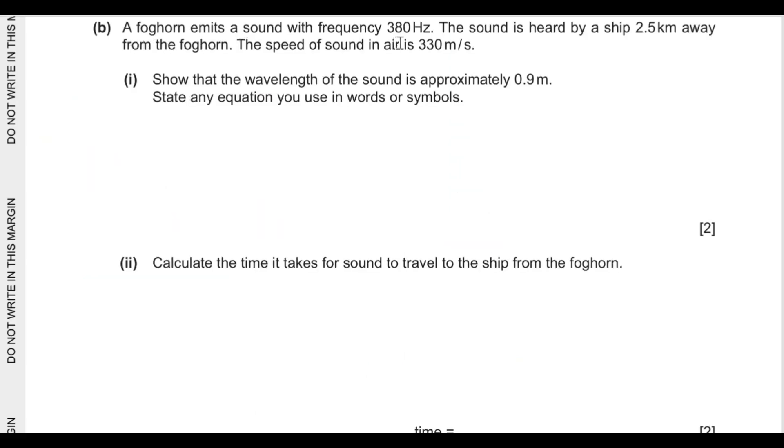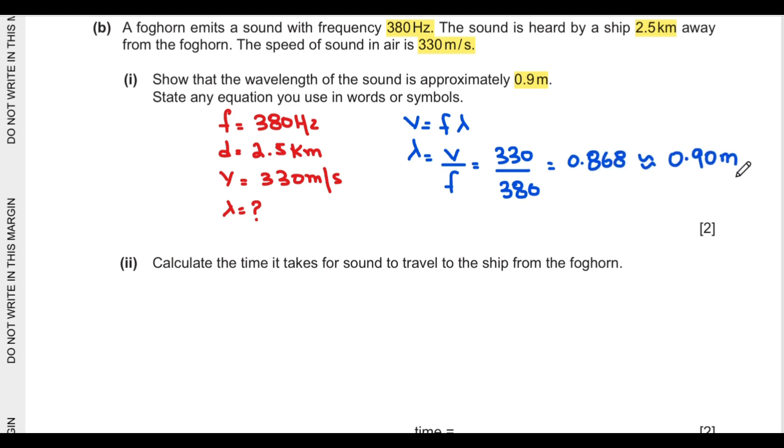Part B says a foghorn emits a sound with frequency 380 hertz. The sound is heard by a ship 2.5 kilometers away. The speed of sound in air is 330 meters per second. Show that the wavelength of the sound is approximately 0.9 meters. State any equation you use in words or symbols. We can use wave equation v equals frequency times wavelength. So wavelength equals speed over frequency, 330 over 380. The wavelength is 0.868 or approximately 0.9 meters.